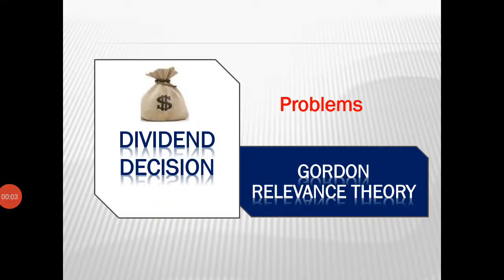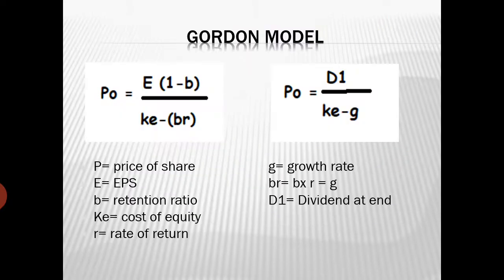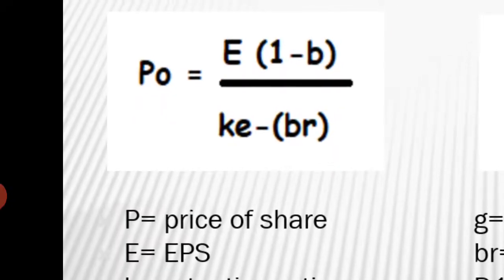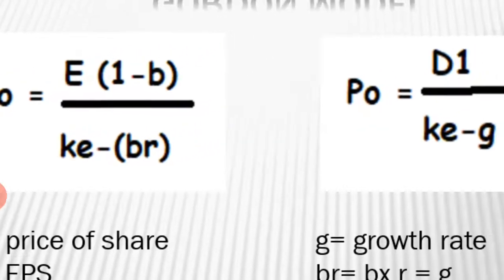Students, today we are discussing some problems related to Gordon's Relevance Theory. The equation used in the Gordon model is P0 = E(1 - B) / (KE - BR), where E is EPS, 1 minus B is the retention ratio, KE is the cost of equity, B is the retention ratio, and R is the rate of return.